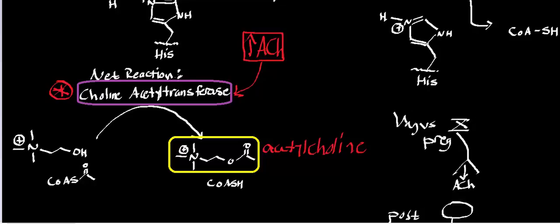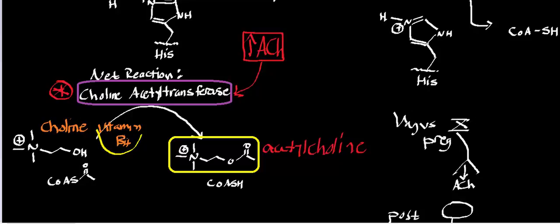If you are a cholinergic neuron, you are synthesizing plenty of choline acetyltransferase and therefore a lot of acetylcholine. For the reaction, we need two substrates. The first molecule is choline — also referred to as vitamin B4. Choline is mainly obtained through the diet. It is synthesized in humans to a very small extent, so small that choline is now considered an essential nutrient, meaning you need to get it through the diet to have healthy levels of acetylcholine and certain phospholipids.